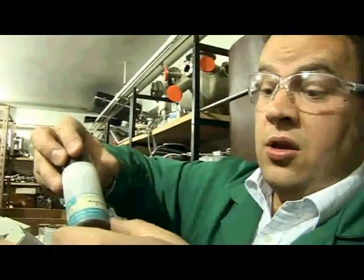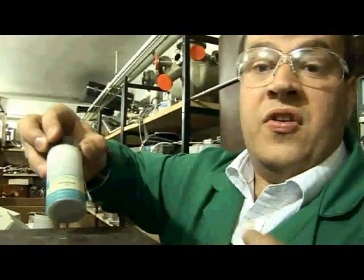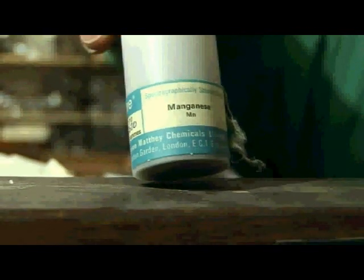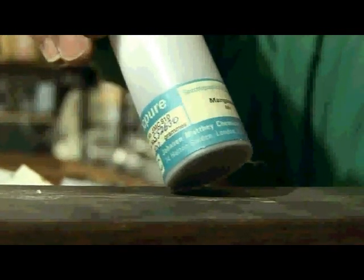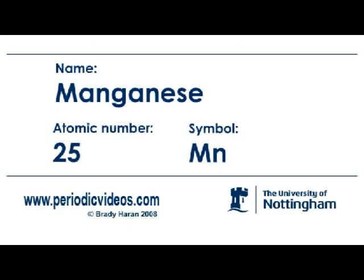So this is manganese metal. Very often in chemistry we use manganese in the form of permanganate as an oxidising agent, but this is manganese metal. Manganese is right in the middle of the row of transition metals, and it has five electrons, which can give it really very rich chemistry.